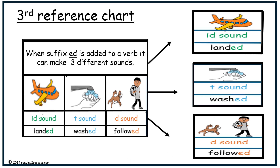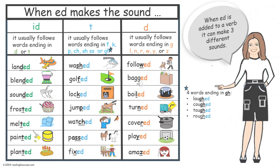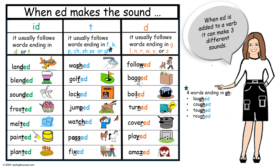Third reference chart. When suffix -ED is added to a verb, it can make three different sounds: -ID as in the word landed; -T as in washed; and -D as in followed. This reference chart provides a list of words for the three ending sounds.